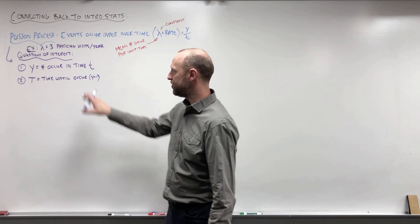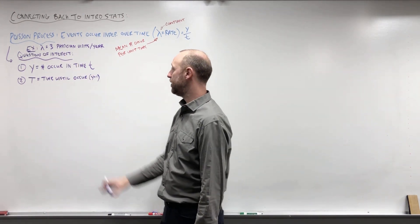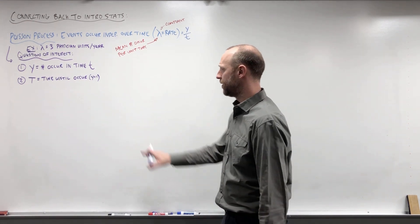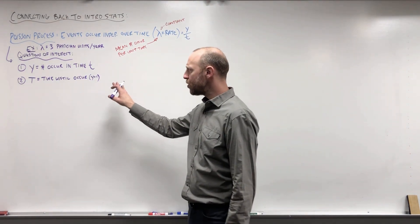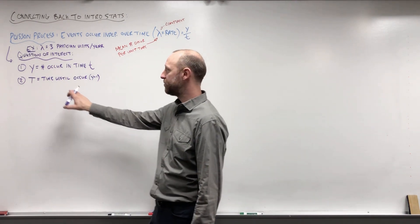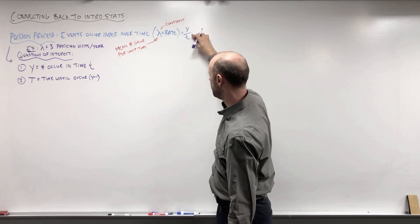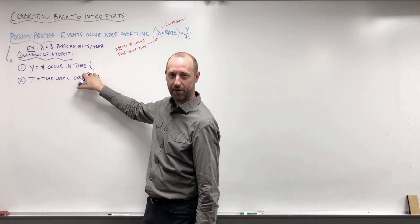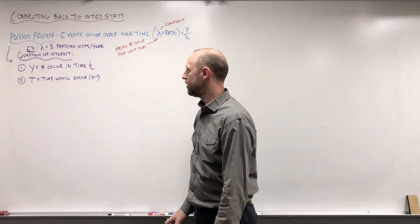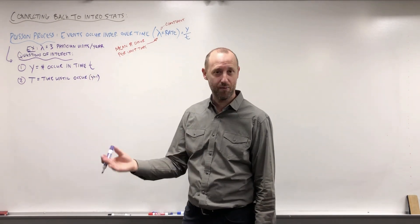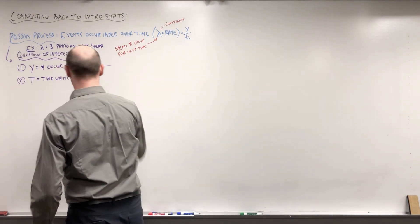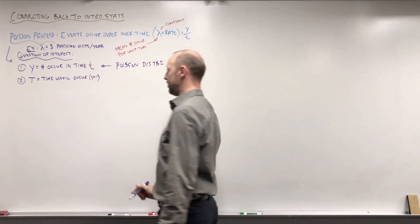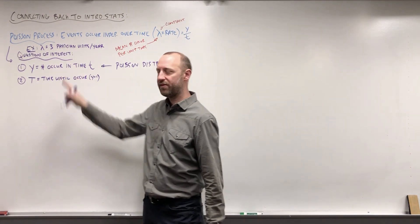Thinking about this process, let's use the example of the number of visits to a doctor or physician per year, and suppose that on average there are three visits per year. We know the rate at this point — living in this theoretical world. Questions we might want to ask: we might want Y, the number of occurrences per unit time, to be the random variable. We ask, how many times does the event occur in a specific period of time? For instance, what's the probability someone doesn't go at all in a year, or what's the probability someone goes five or more times? This gives rise to the Poisson random variable, or the Poisson probability distribution, which we can use to model the number of times the event occurs in a specific period of time.